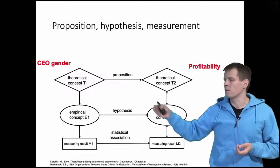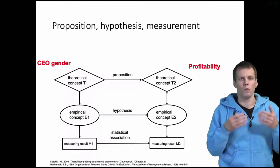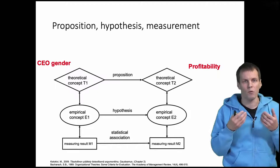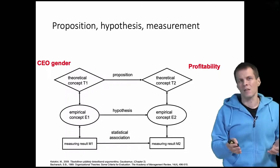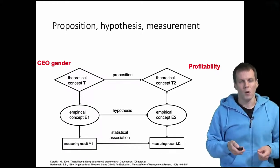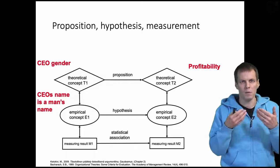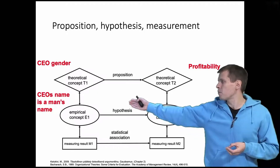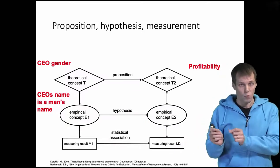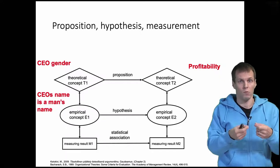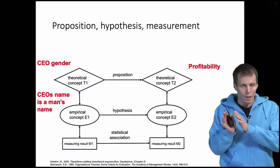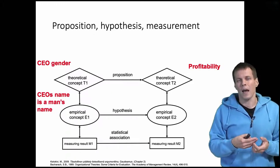So how do we actually measure CEO gender? We could have every CEO go through a medical examination, or we could send them surveys asking them to report their gender, but that's not practical. In practice, how do we determine which CEOs are men and which are women? One easy way is to look at their names. The names of CEOs are public information, and we can check whether the name is a man's name or a woman's name and assign the gender variable according to that rule. So measurement is about assigning numbers according to a rule.